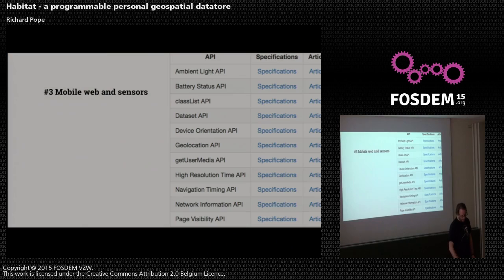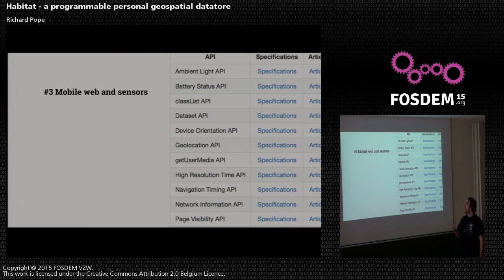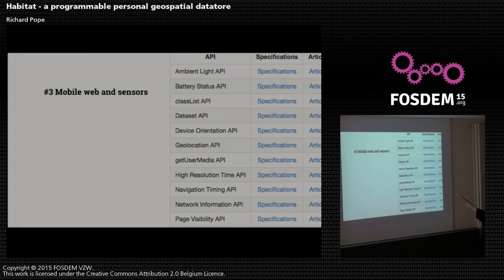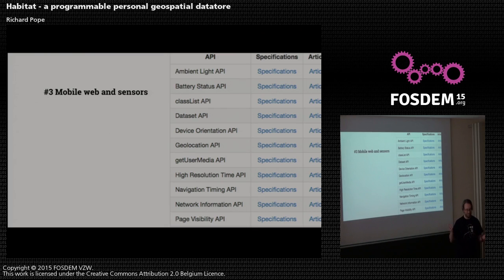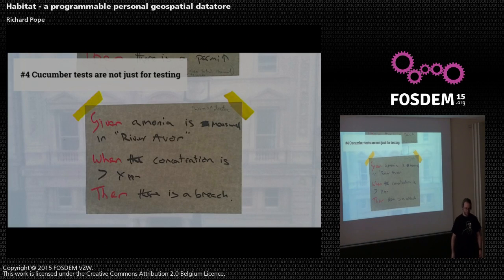Thirdly — and you kind of heard this earlier with Andrew's talk — the amount of data we're all generating is going up and up. Even the number of sensors in a mobile phone that a web page can access has exploded in the last couple of years: battery status, ambient light, geolocation combined with device orientation — it's shed loads of data. So where do you want all that data to go, and who do you want to be the broker? Do you just want it to be Google? It feels like there's a lack of alternatives at the moment.